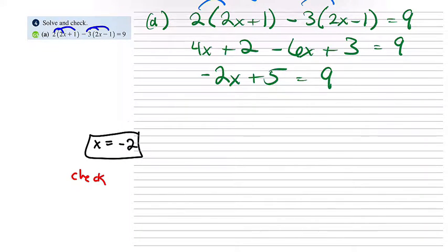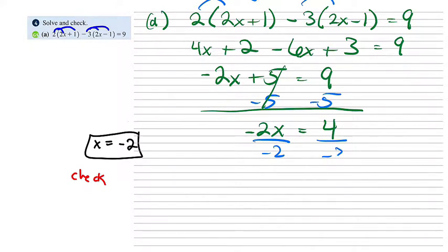So then subtract 5, subtract 5. Let's cancel. We get negative 2x equals 4. Then divide by negative 2 and divide by negative 2. x should equal negative 2. So then we will check - you just plug it into the original, and once you simplify it, the left should equal the right.